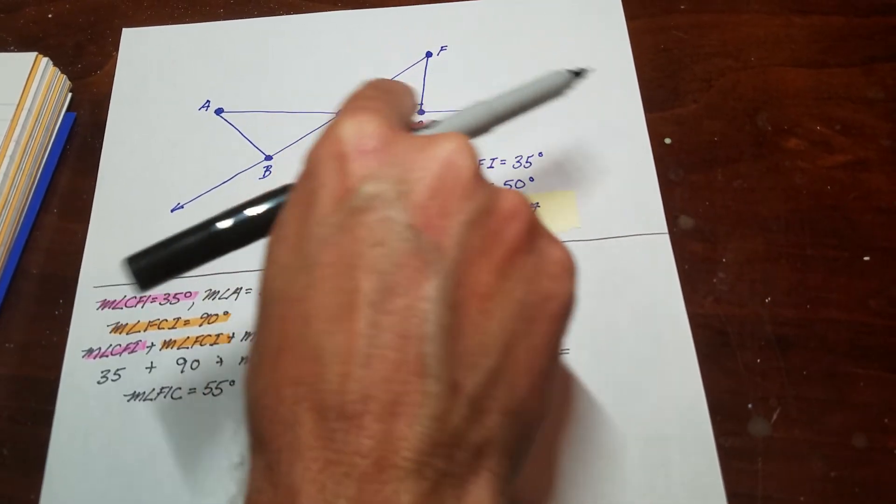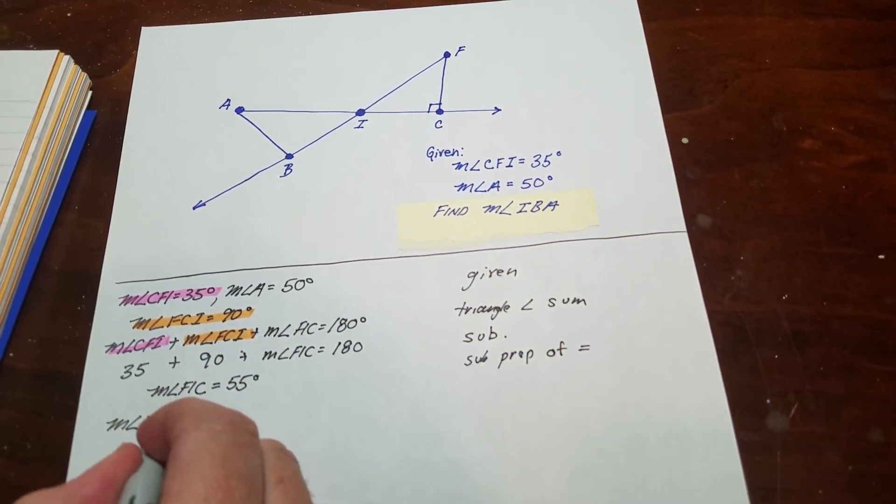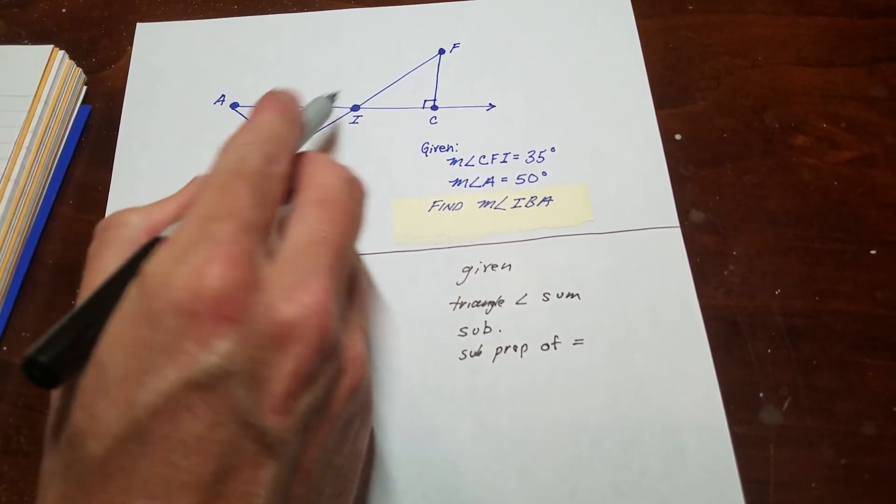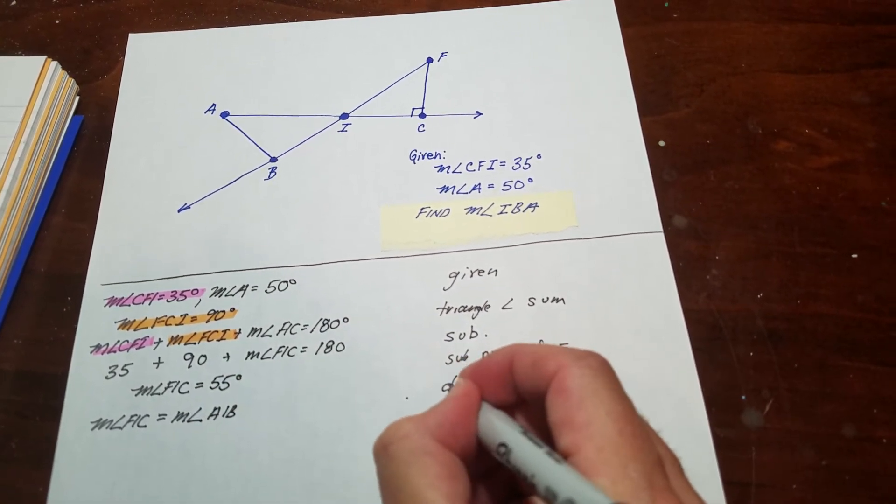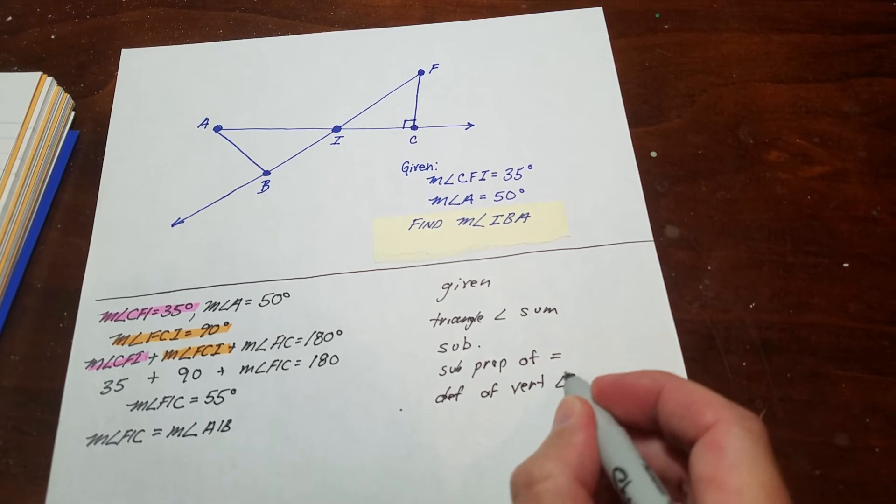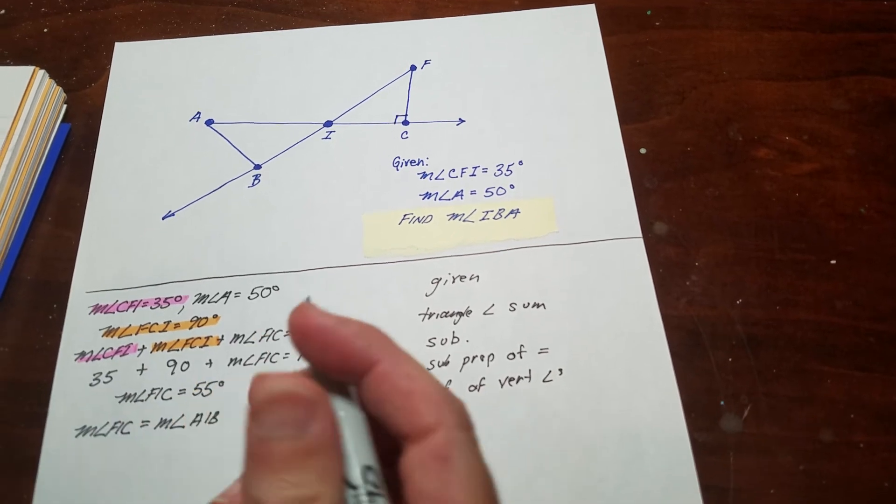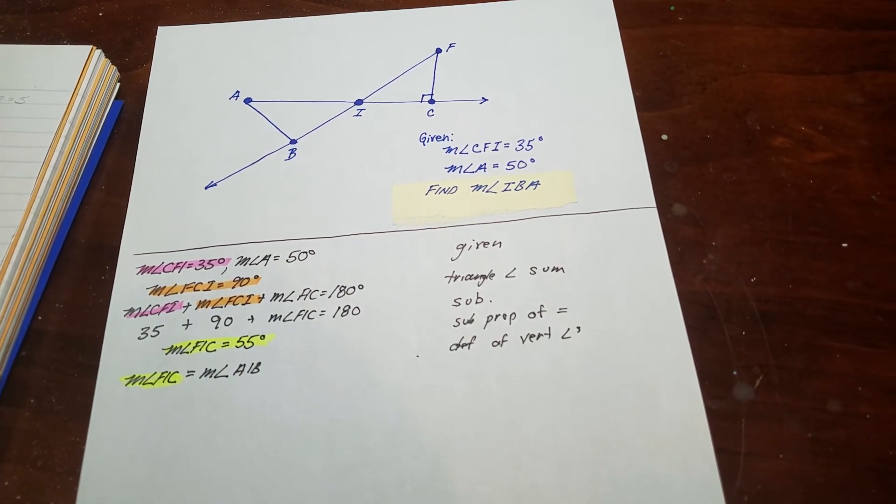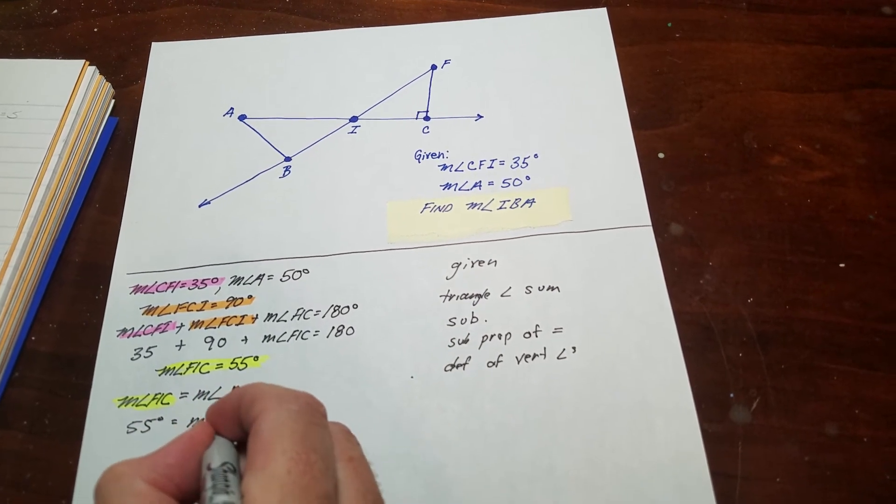Now I know angle FIC. I also know that angle FIC equals the measure of angle AIB, which is on the other side, because they're vertical angles. I write the definition of vertical angles. Now I substitute: I know FIC is 55 degrees, so 55 degrees equals the measure of angle AIB.